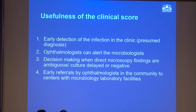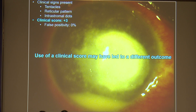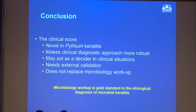So how is it useful to us? In the clinics, the ophthalmologist can be aware of pythium keratitis and can alert the microbiologist to be more careful in their assessment of direct microscopy of corneal scrapings. Where microscopy results are ambiguous or culture reports are delayed or negative, it can help in therapeutic decision making. Also, for ophthalmologists who do not have access to microbiology facilities, they can refer the patient early so as not to delay treatment. Going back to our index patient — if we had used the clinical score, a score of three gives a false positive rate of 0.0%, practically ruling in pythium keratitis. However, microbiology remains the gold standard for etiological diagnosis, and the clinical score doesn't replace that. Our strategy is novel but needs external validation.